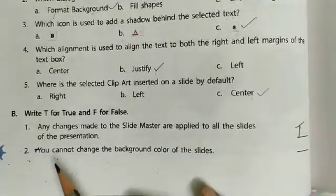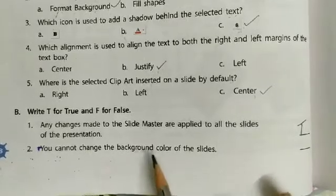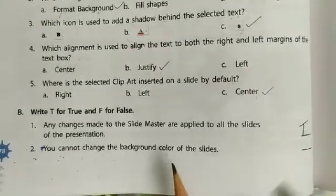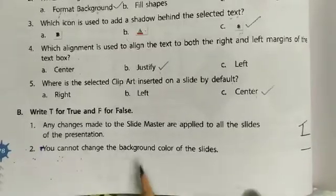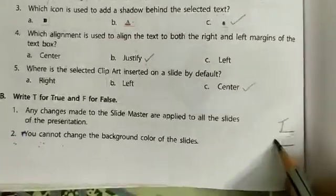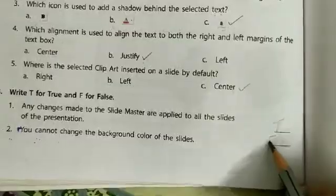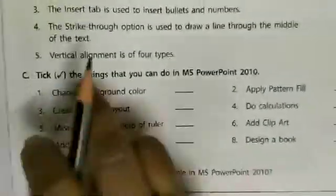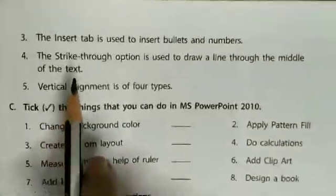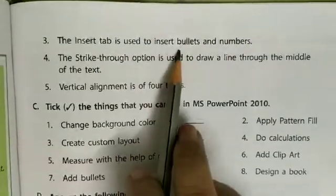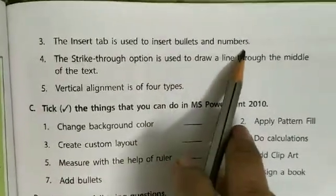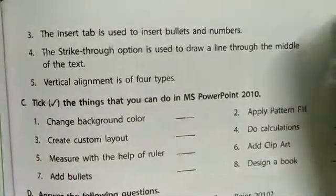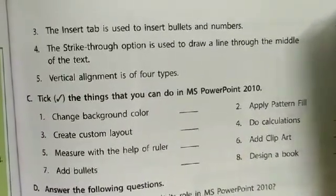Second: you cannot change the background color of the slide. Is it true or false? This one is False, because we can change the background color of the slide. Write F for False. Third: the Insert tab is used to insert bullets and numbers. This is False, because the Home tab is used to insert bullets and numbers. Write F for False.